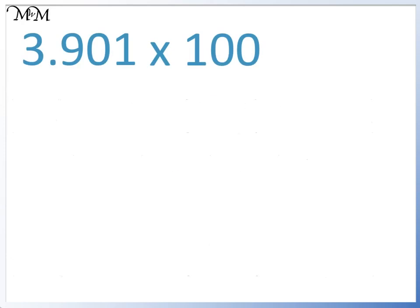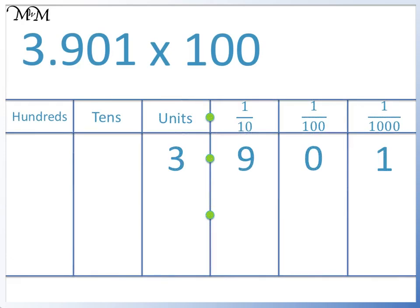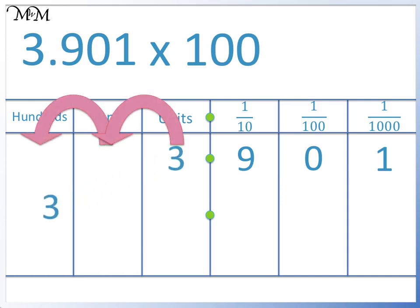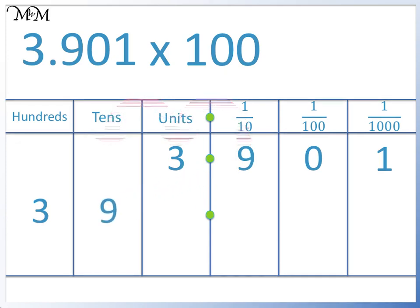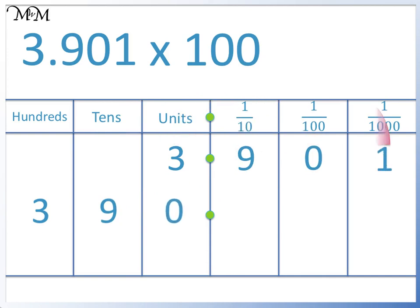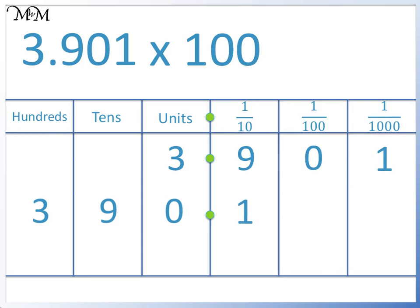Here is our final example: 3.901 times 100. We move each digit two places to the left. We will start with the 3, and the next three digits will follow on. 3.901 times 100 equals 390.1.